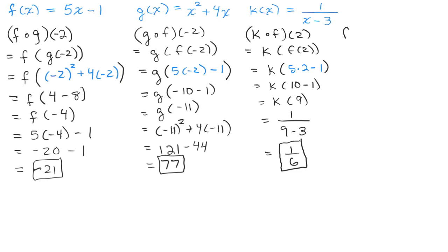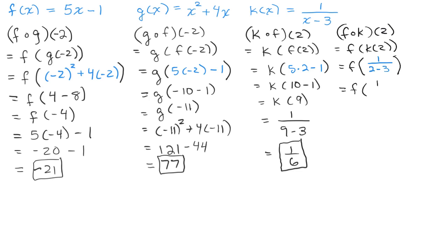Now let's do f of k of 2 — try it on your own first. F of k of 2 means we do k of 2 first. Plugging 2 into k of x equals 1 over x minus 3 gives 1 over 2 minus 3, which is 1 over negative 1, which equals negative 1. Now we plug negative 1 into the f function: 5 times negative 1 minus 1 equals negative 5 minus 1, which is negative 6.